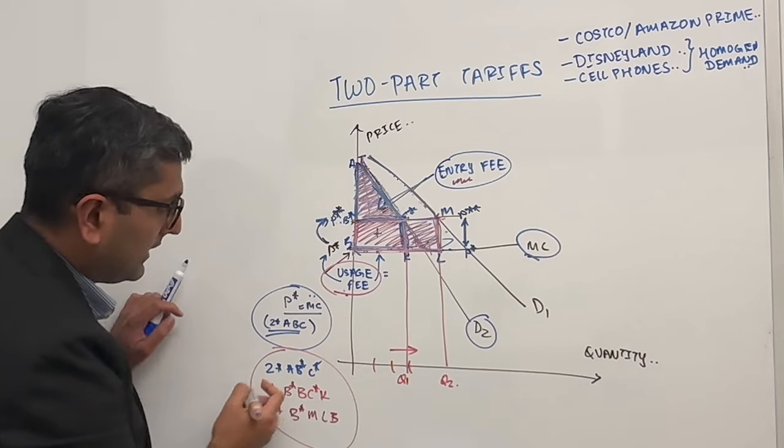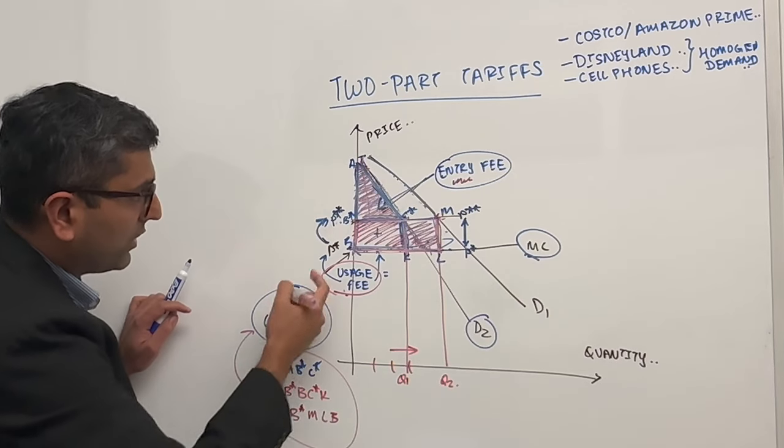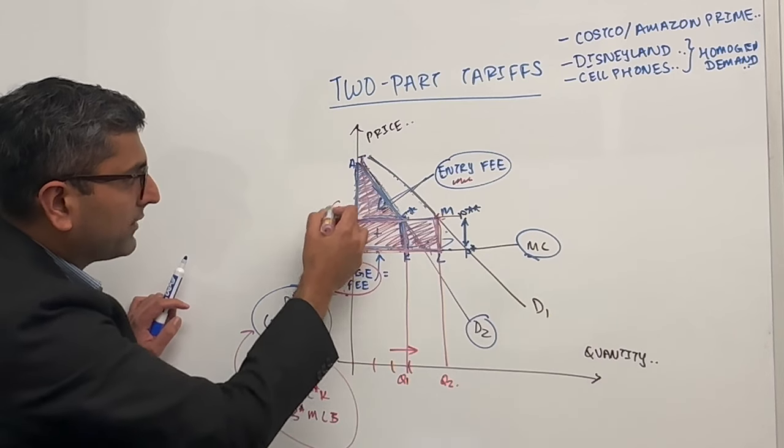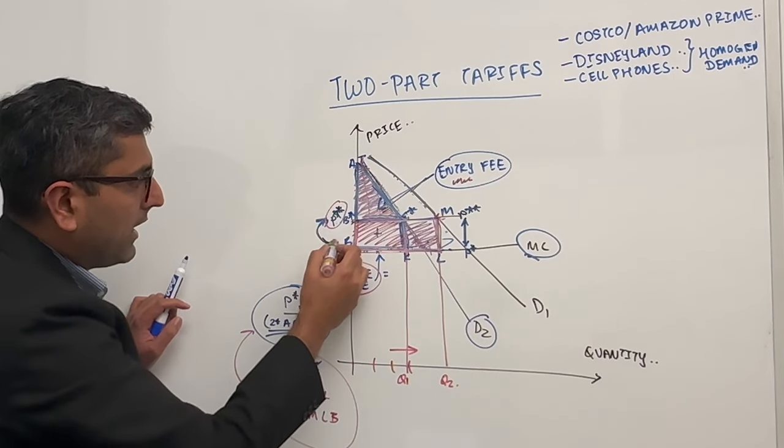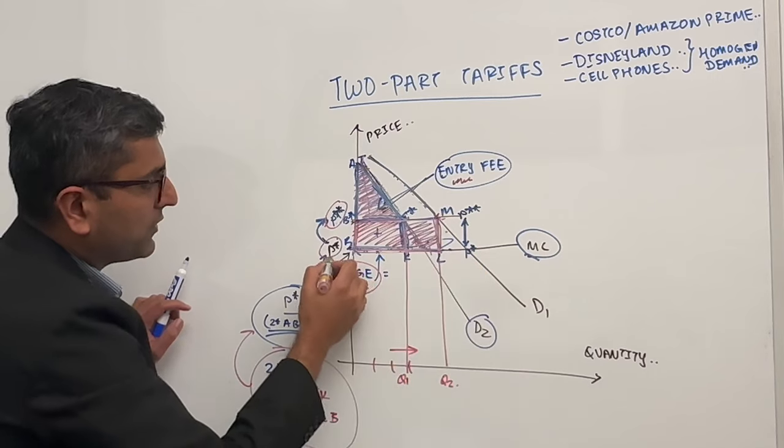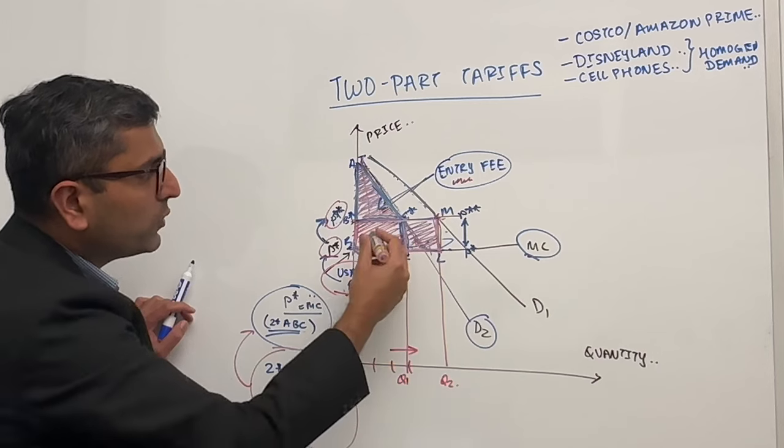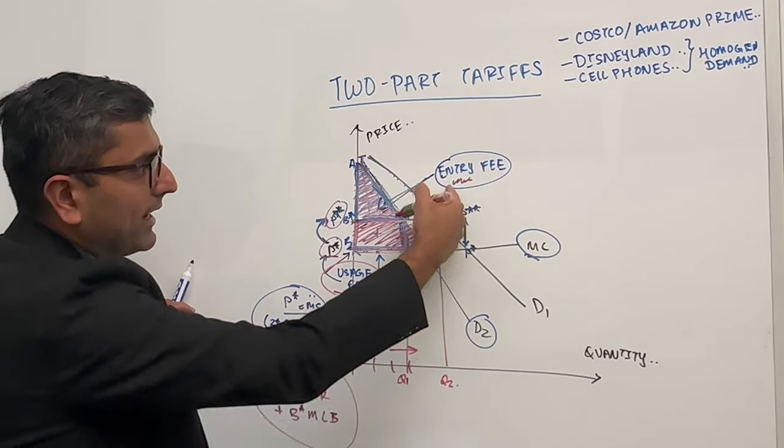So this is easily higher than the original two times ABC. So charging a price p star star above the mc, which was originally p star, we are now able to extract much more from usage fee and entry fee.